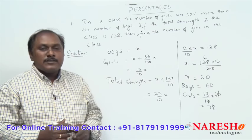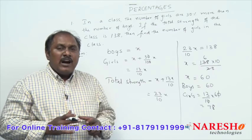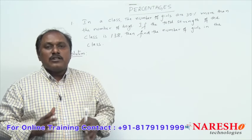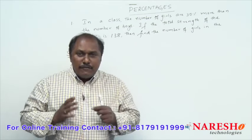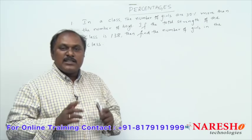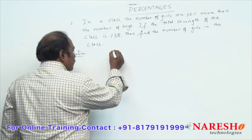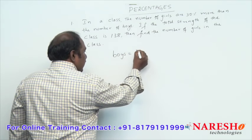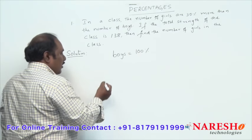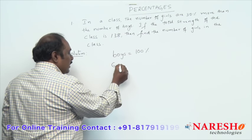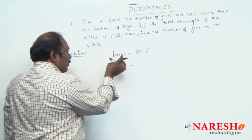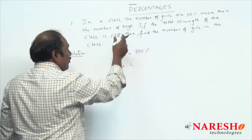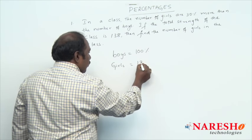This is one method of solving the problem — a very general way. Now let us see how to solve this problem in a very simple alternate method. Instead of assuming the number of boys as x, assume the number of boys in the class is 100 percent. Then the number of girls should be 30 percent more than boys, so girls should be 130 percent.